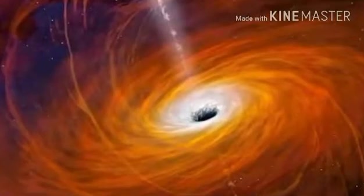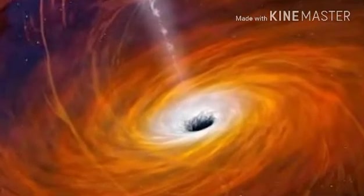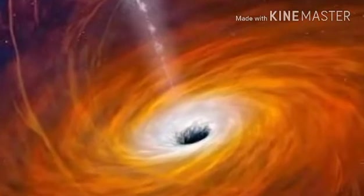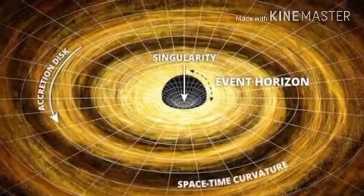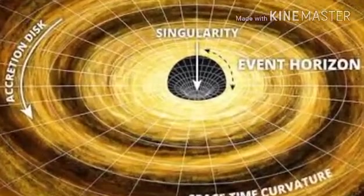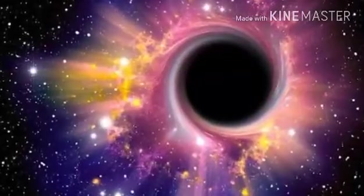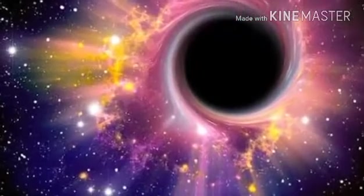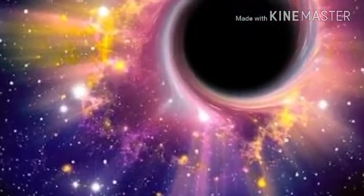Black holes are weird, insanely dense objects that are crammed into such a small space they cause space-time to distort and the laws of physics to break down into a singularity. Fortunately, the universe shields us from this weirdness by wrapping black holes in event horizons.